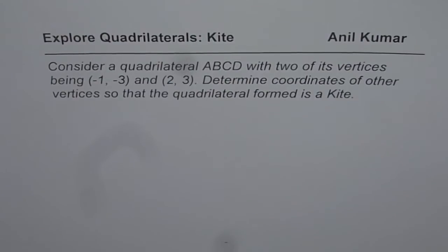I'm Anil Kumar sharing with you an excellent question on quadrilaterals, and this time we have taken up kite. Consider a quadrilateral ABCD with two of its vertices being (-1, -3) and (2, 3). Determine coordinates of other vertices so that the quadrilateral formed is a kite.